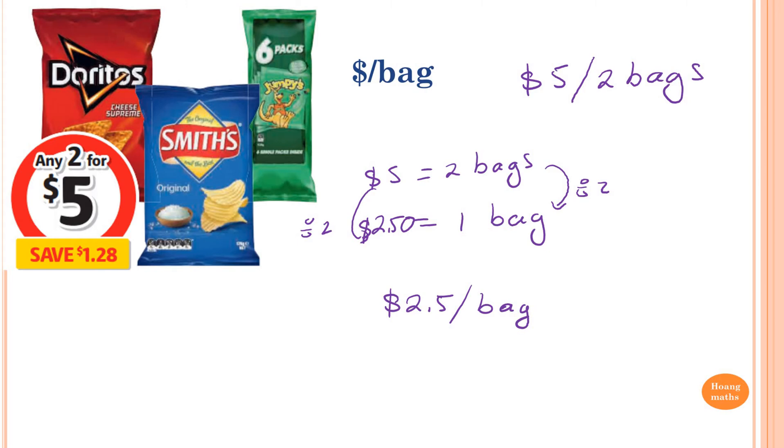Otherwise, you can just write the rate first and then go five divided by two. We call this simplifying rates as well.